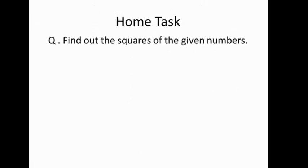Now there is a home task. You have to find out the squares of the given numbers: a part is 12, b part is 19, c part is 25, d part is 27, and e part is 33. Do work them out, and if there is any problem we will discuss it. Thank you so much boys, have a nice day and Allah Hafiz.